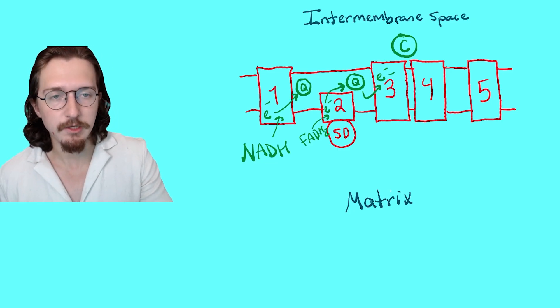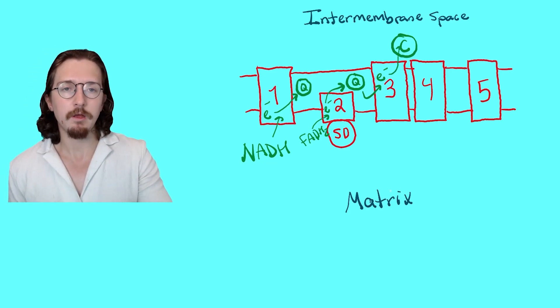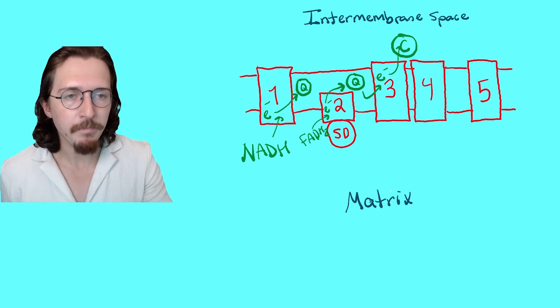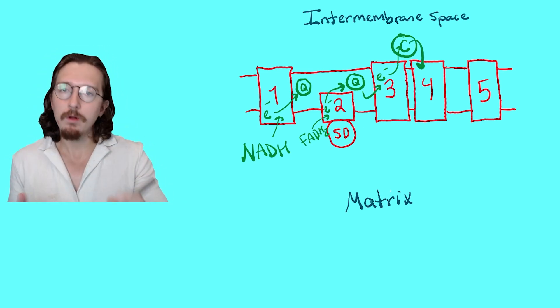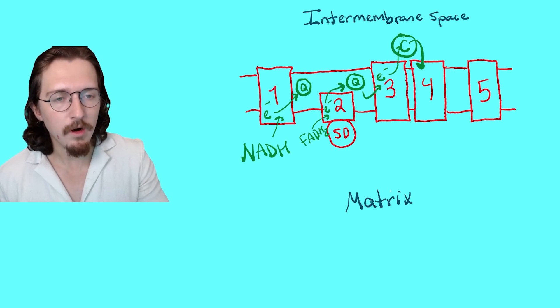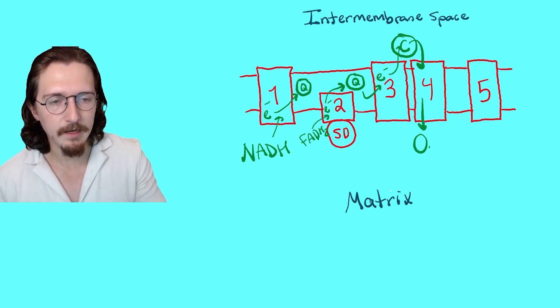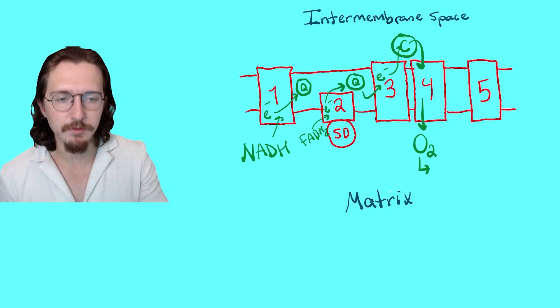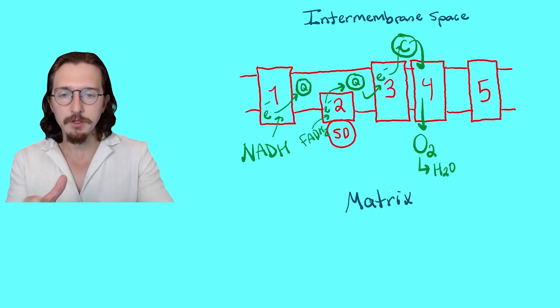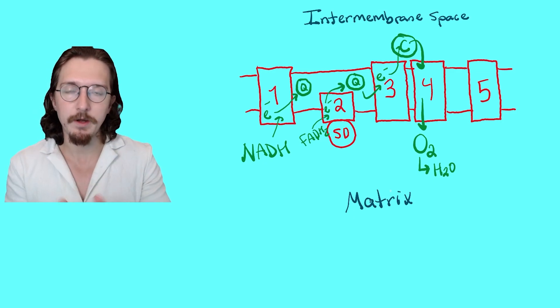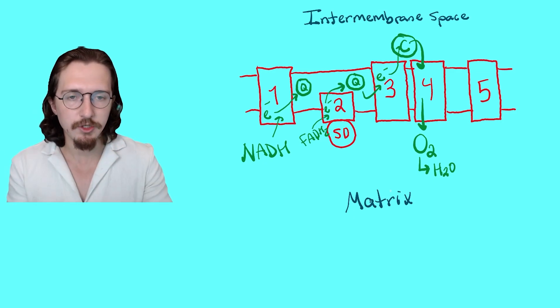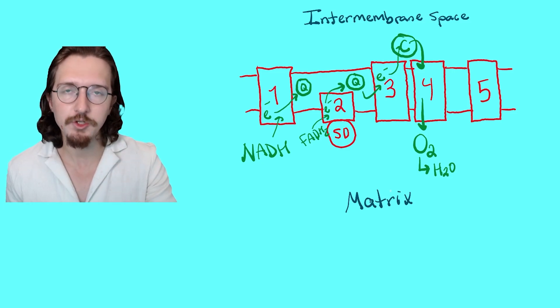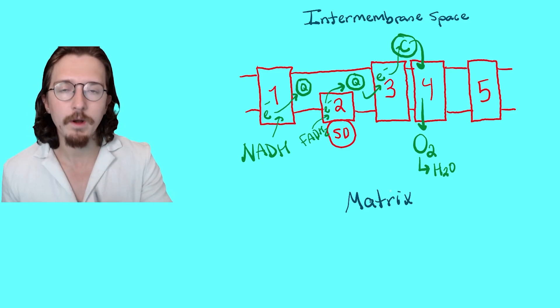And then complex 3 will give these electrons to cytochrome C, which is a molecule in the intermembrane space, and cytochrome C will deliver these electrons one electron at a time to complex 4. And what will complex 4 do? Well, complex 4 will shunt these electrons ultimately to the final electron acceptor, which is oxygen. And in the process, oxygen is reduced into water. So essentially, NADH and FADH2 are initially oxidized, give up their electrons, and through a series of oxidation reduction reactions, these electrons are given to oxygen, which is reduced.